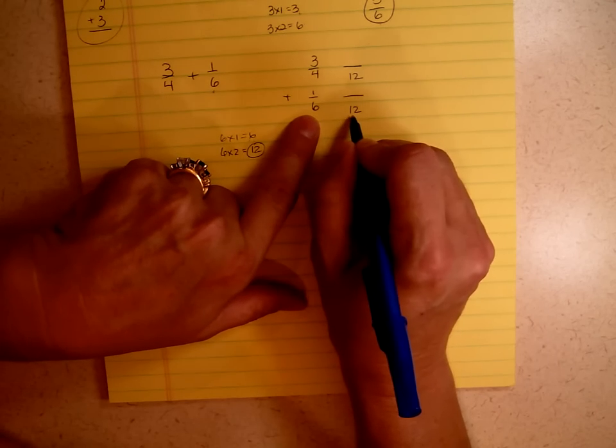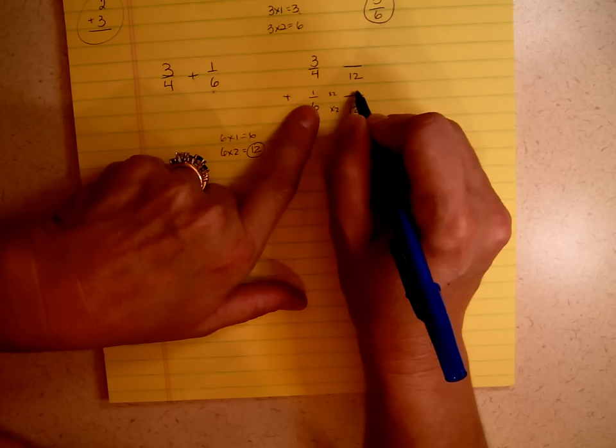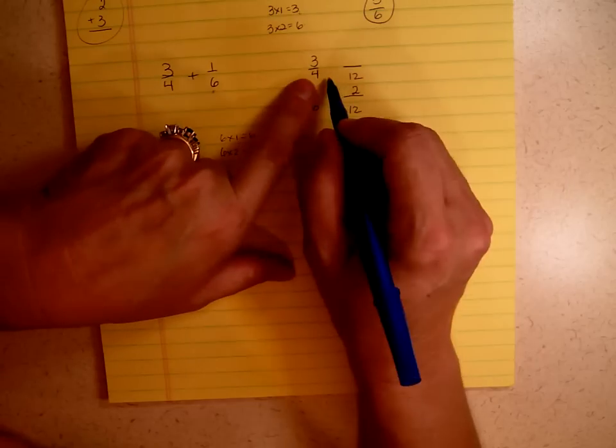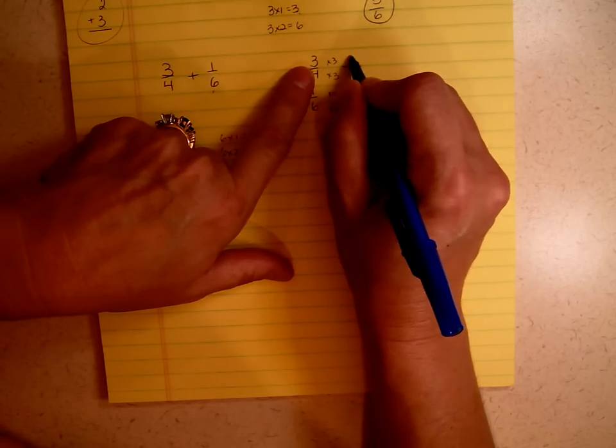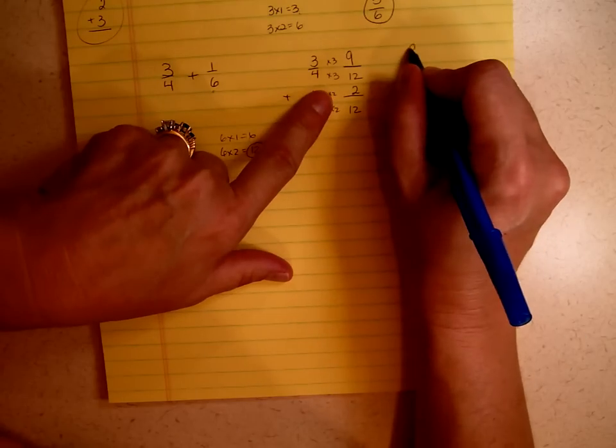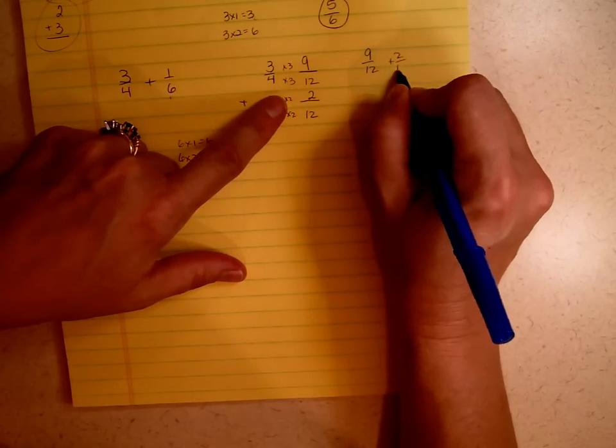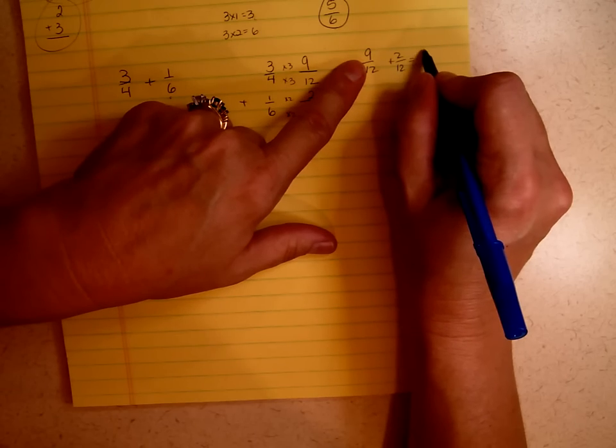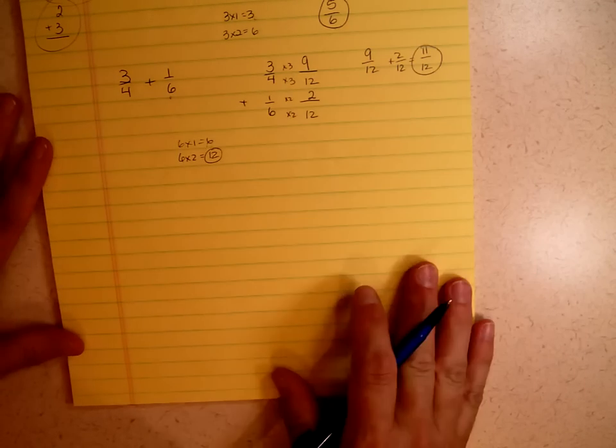So let's look at six and twelve. Six times two gives me twelve. So one times two gives me two. Four times three gives me twelve. Three times three gives me nine. So now my problem becomes nine-twelfths plus two-twelfths. Simply add my numerator. Nine and two is eleven-twelfths. And that's my answer.